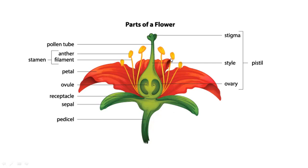Every part deserves something. These sepals are the flower budding stage. These sepals are the protection of the flower. The second part is the flower.